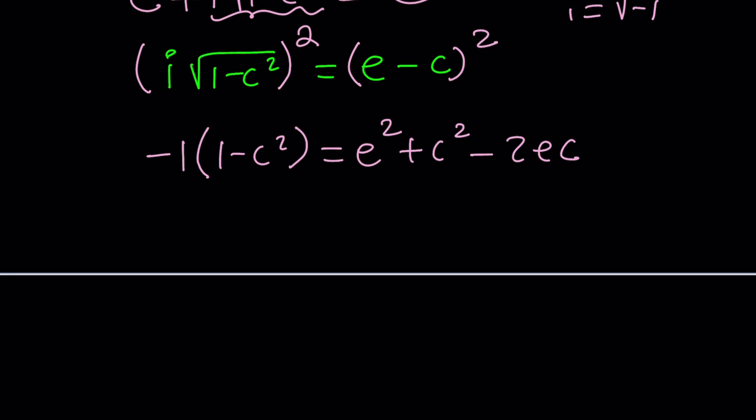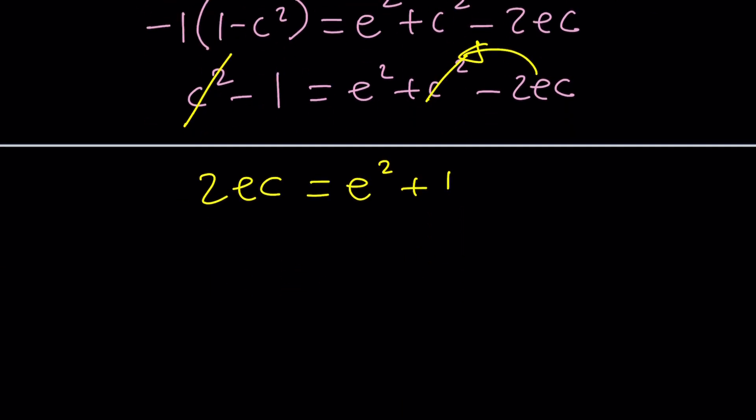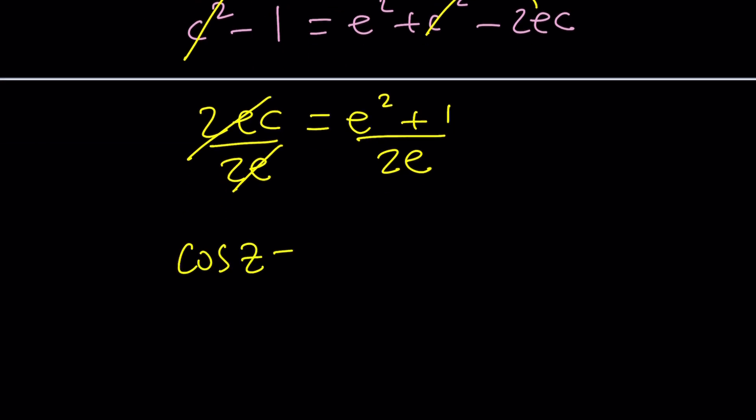On the right hand side we get e squared plus c squared minus 2ec by using the formula. Multiply by negative one, this becomes c squared minus one equals e squared plus c squared minus 2ec. Now c squared cancels out. E is a constant so I want to solve for c which is cosine z. Put 2ec on the left and add one to both sides. Divide both sides by 2e and we end up with c equals cosine of z equals (e squared plus 1) over 2e. That's why substitution is powerful.